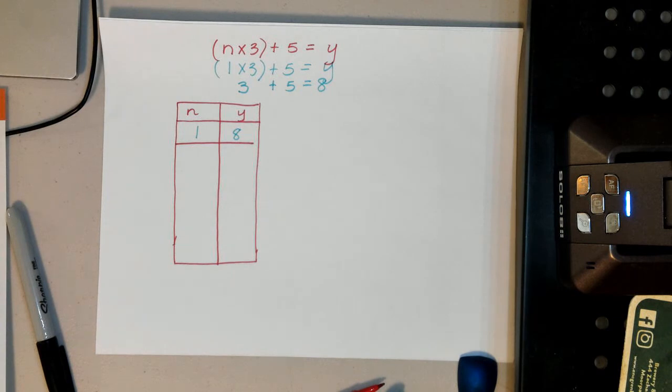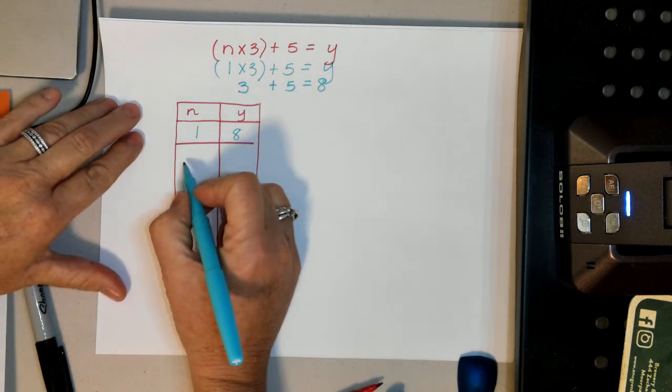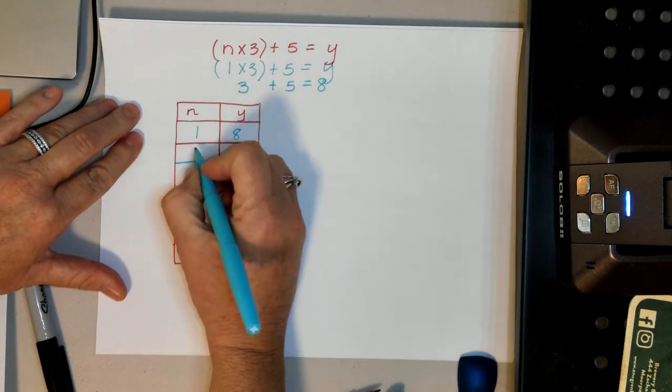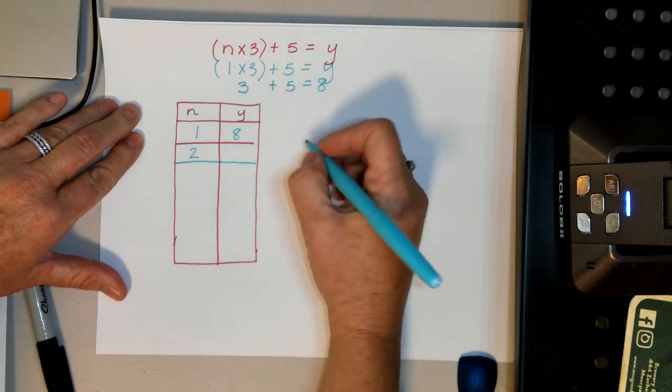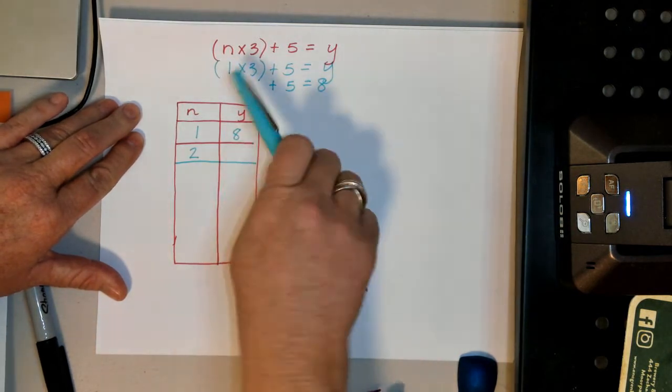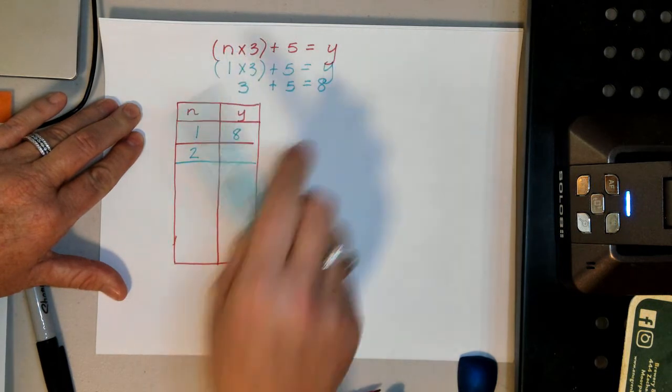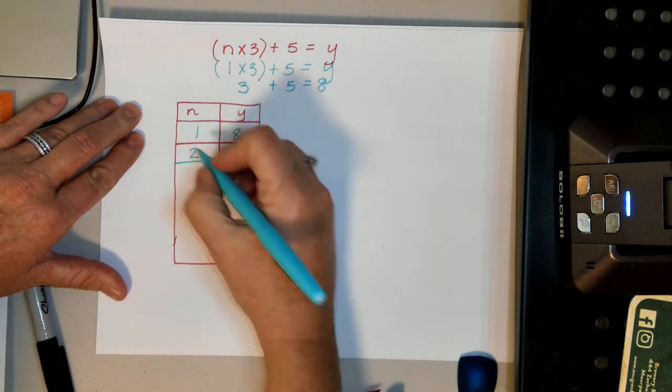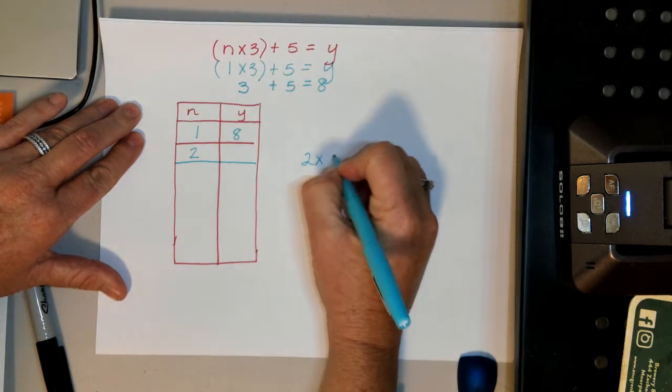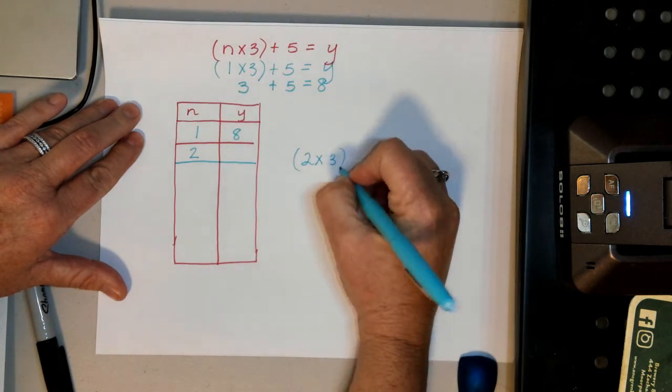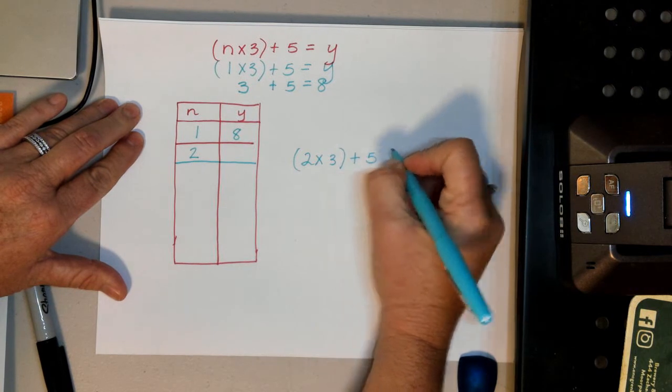Now, what if they give us a, we'll just do another number, and we'll do the same thing. Say n is worth 2. What if n is worth 2? We're going to rewrite the equation again. It's still the same equation. n times 3 plus 5 equals y. So now we're going to put the 2 as the n, so it's going to go 2 times 3 plus 5 equals y.